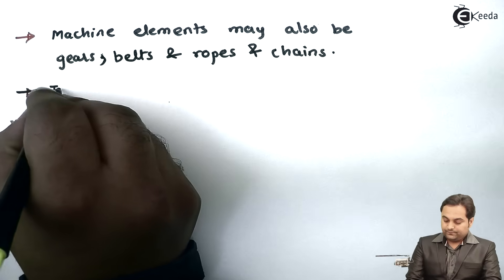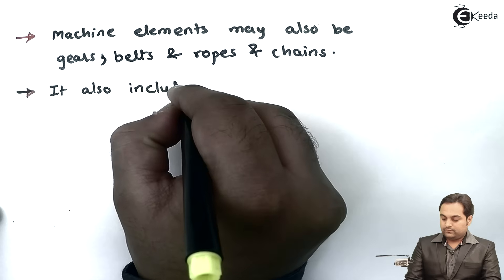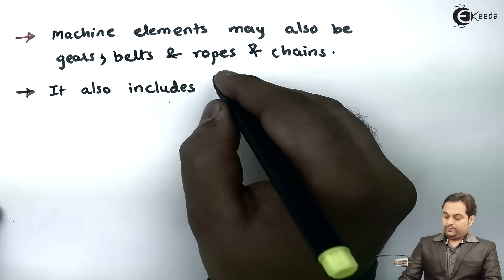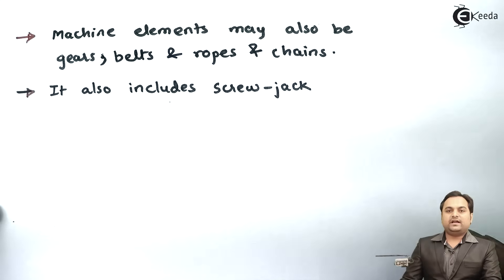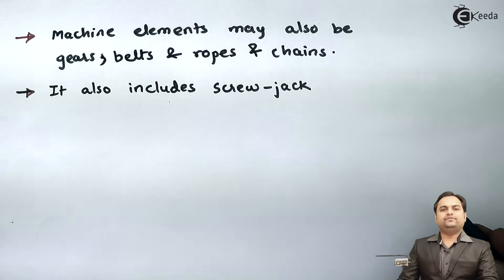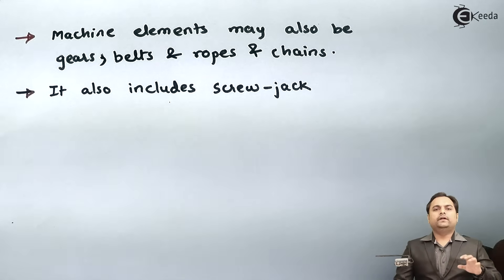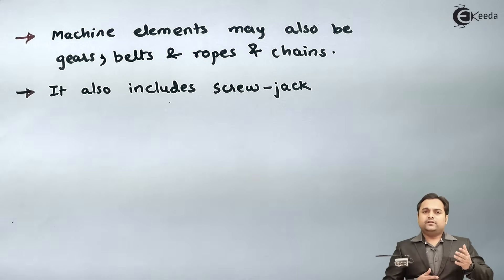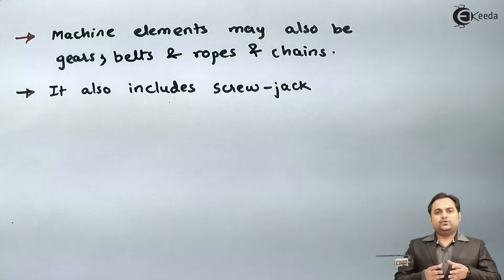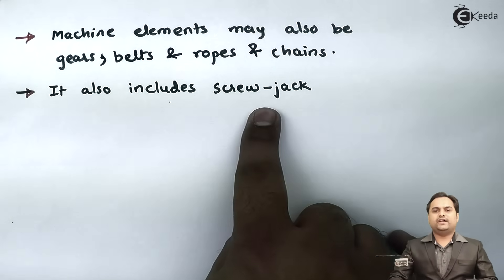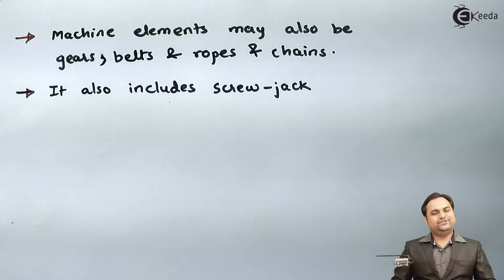Another application includes the screw jack, which is a machine used to lift heavy vehicles when a tire is punctured. If we want to replace the punctured tire of a vehicle, we need to lift the vehicle, and for that we use a machine element called a screw jack. This screw jack is designed with the help of the knowledge of machine design.